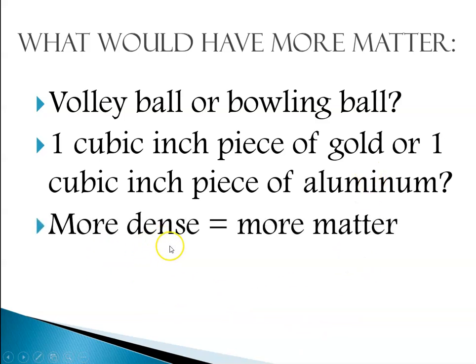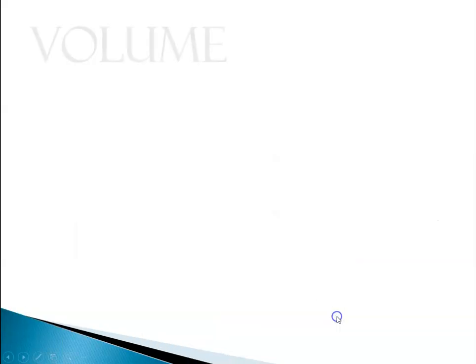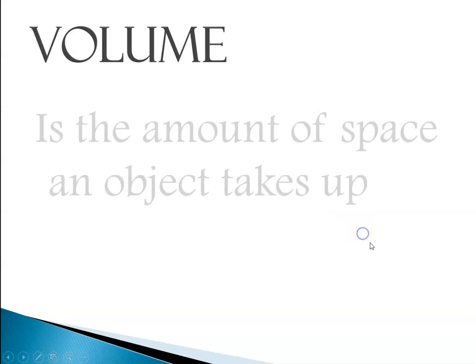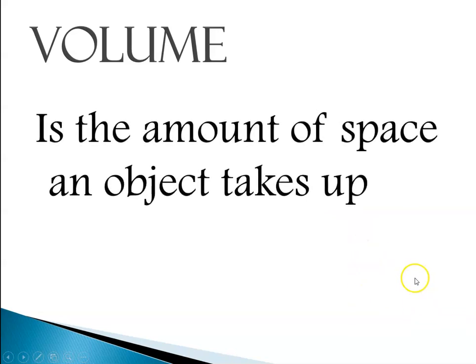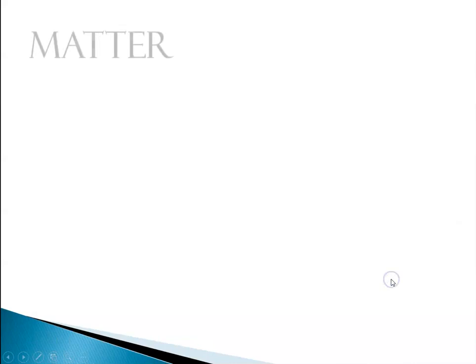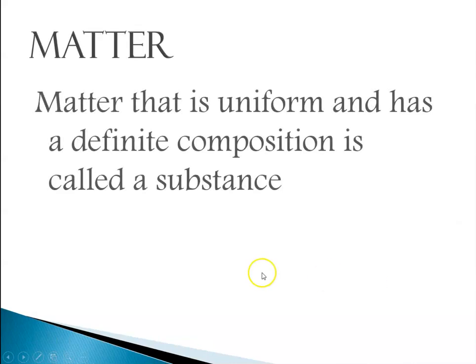So that leads us to talking about volume. Because if we're going to talk about density, we have to talk about mass and volume. You learned about density at the junior high. So what is volume? Volume is the amount of space an object takes up. Matter that is uniform and has a definite composition is called a substance.